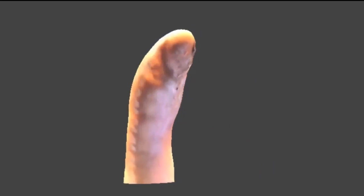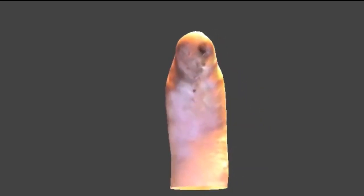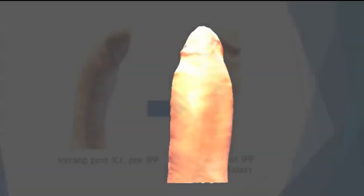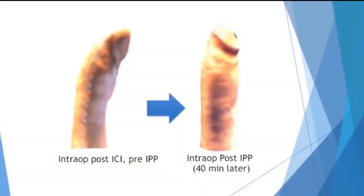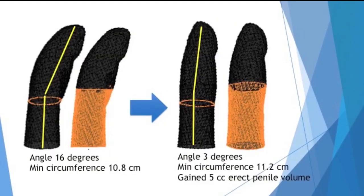Our initial experience with 3D photography in patients with Peyronie's disease has been promising. This is a 3D photograph taken after intracavernosal injection of a 41-year-old man with proximal tapering and dorsal curvature of his penis. He was bothered by loss of penile girth and elected to undergo implantation of an inflatable penile prosthesis. A post-operative photograph demonstrated improvement in curvature from 16 to 3 degrees, gain in minimum penile circumference from 10.8 to 11.2 centimeters, and an increase in penile volume of 5 cubic centimeters.